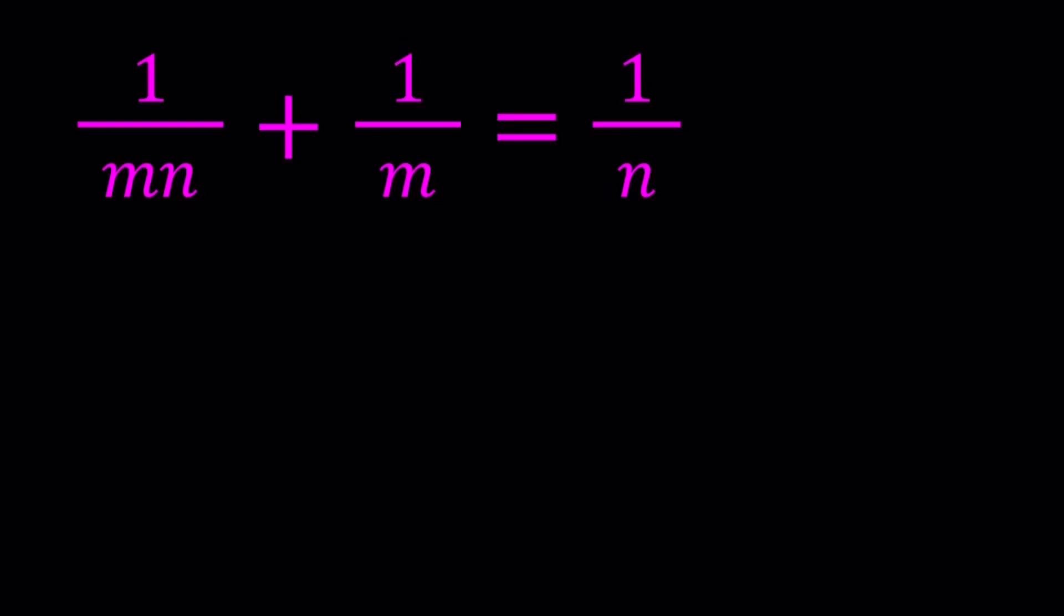Hello everyone. In this video, we're going to be solving a Diophantine equation for prime numbers. m and n are primes, and we have this equation: 1 over mn plus 1 over m equals 1 over n.